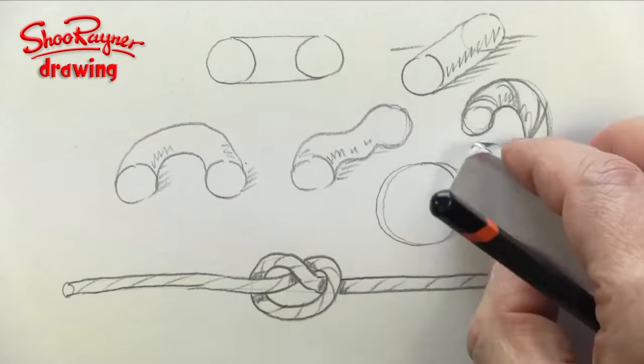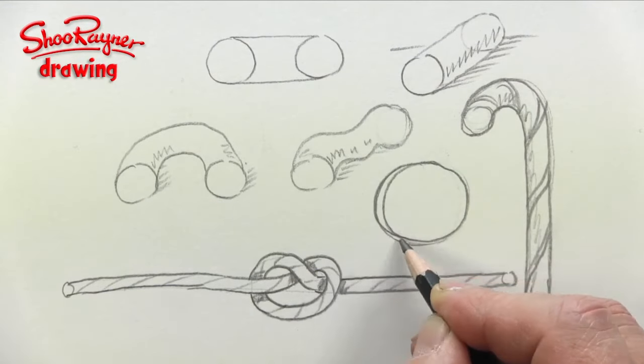Now two circles connected by very short lines will make a disk.